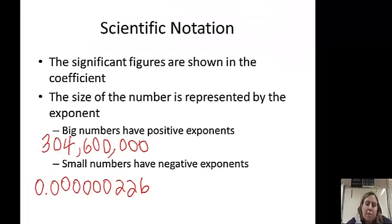Numbers that are in scientific notation also can have a certain number of significant figures. Now, with scientific notation, big numbers have positive exponents. Notice that you do not see a decimal here. And here it has four significant digits. So, we're going to write it as 3.046 times 10 to an exponent. That's how many times you move your decimal. It's big, so it's positive. Move it one, two, three, four, five, six, seven, eight times. And this has four sig figs.